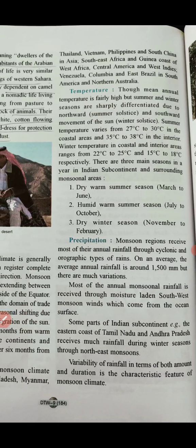The mean annual temperature is fairly high because it lies in the tropical region. Summer and winter seasons are sharply differentiated due to the northward and southward movement of the sun. Summer temperature varies from 27 to 30 degrees Celsius in coastal areas and 35 to 38 degrees Celsius in interior areas, as continental climate has a greater temperature range than coastal areas.